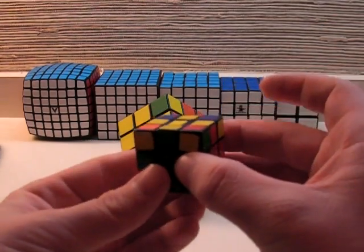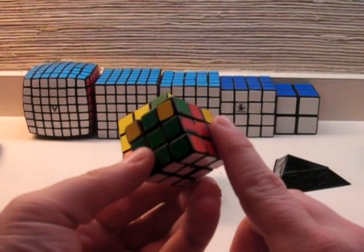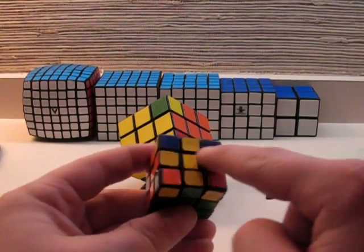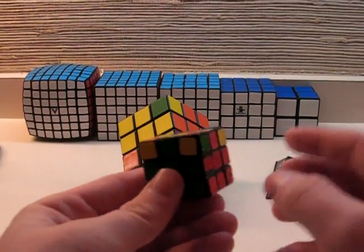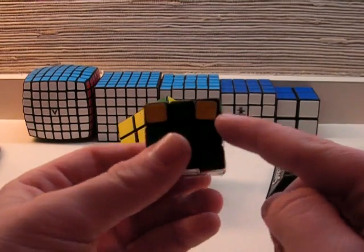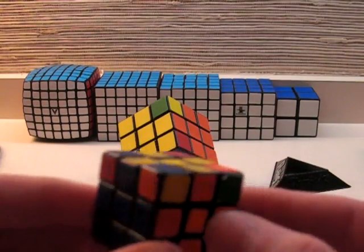As you can see by my example cube, I have the first two layers corrected, the top cross, and the edges match. And now, the corners are in their correct spot, they just don't happen to be turned properly.